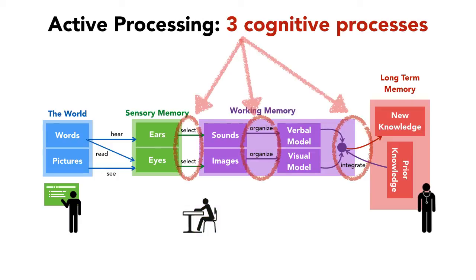Active processing is really three different cognitive processes. The working memory, in addition to storing information, has to do these things: it's responsible for selecting which sensory information we want to pay attention to, making sense of that information by organizing it into models, and finally integrating it with stuff that we knew from before. All of this processing, plus those things that we had to remember, are all called together cognitive load.